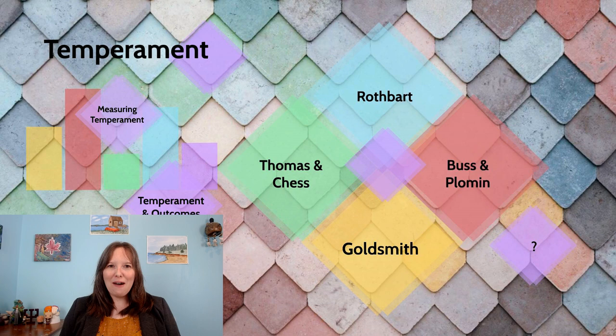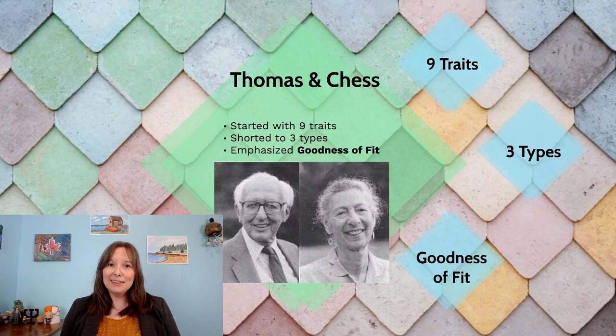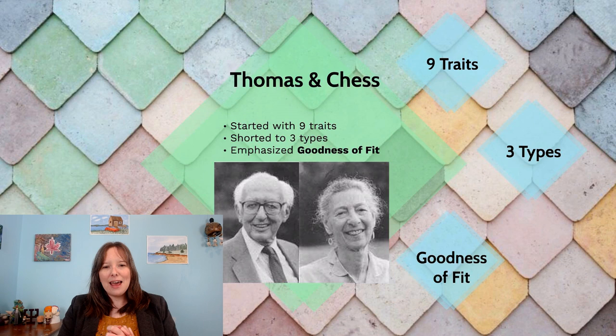Our next school of thought on temperament is the Thomas and Chess school of thought, referring to the work by Alexander Thomas and Stella Chess. Rather than looking at biological underpinnings like Rothbart's theory, we're talking more about environmental influences of temperament — how our temperament fits within our environment. This is really known as goodness of fit.